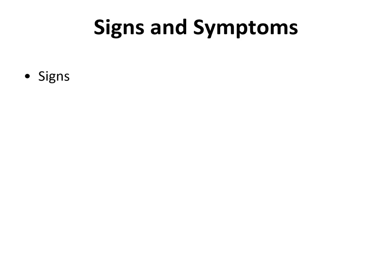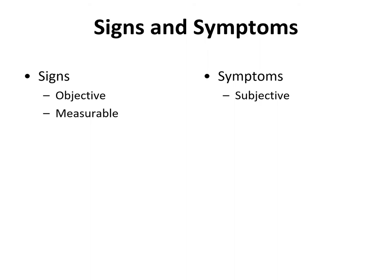The first two terms we're going to use to describe a disease are signs and symptoms. These two terms describe the evidence of disease. In regular conversation, signs and symptoms are used almost interchangeably — we probably only use the term symptoms. But there are important differences. Signs are objective measures of disease — something the health care provider can observe and measure without any input from the patient. Symptoms are experiences and feelings that the patient has, so these are subjective — the health care provider cannot directly observe them and the patient has to tell you they are experiencing them.